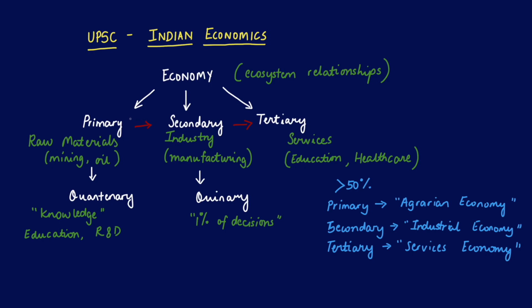There are exceptions, however. One particular exception is India, which went from a primary raw-materials-based economy straight to a services-based economy. What happened is the industrial section didn't grow in a healthy manner, skipping the typical secondary stage.